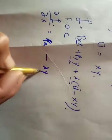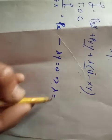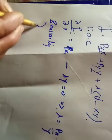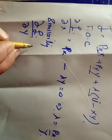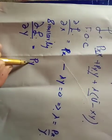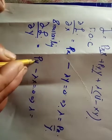Setting lambda times y equal to 0 and solving for lambda, we get lambda equals px divided by y. Similarly, taking the partial derivative with respect to y, we get py minus lambda times x equal to 0. Solving for lambda, we get lambda equals py divided by x.